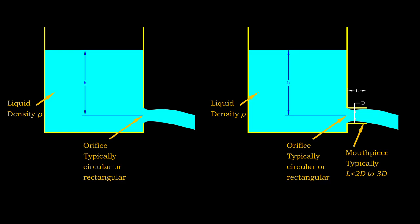It is a short tube with length typically less than two to three times its diameter. An orifice is typically circular or rectangular in shape.